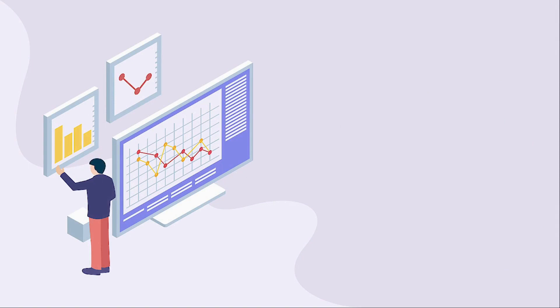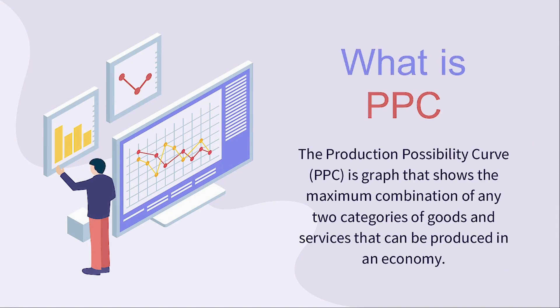First, let's see what is the Production Possibility Curve. It is a graph that shows the maximum combinations of any two categories of goods or services that can be produced in an economy.